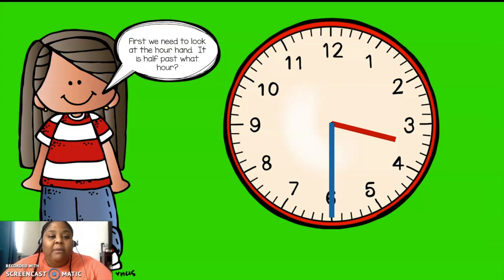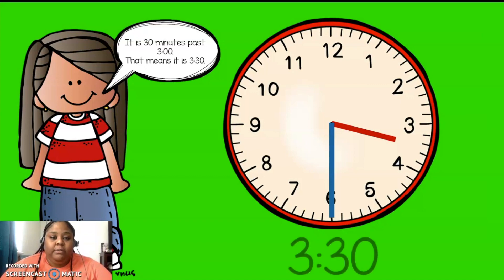First, we need to look at the hour hand. It is half past what hour? It is half past three. The minute hand shows us that 30 minutes have passed since three o'clock. It is 30 minutes past three o'clock. So that means it is 3:30. And that's how we would write it if we were writing it in a digital clock.